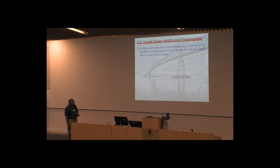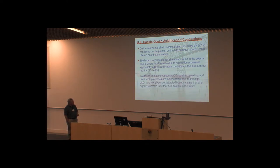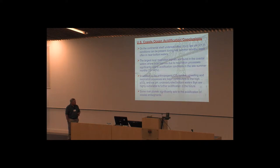In conclusion: continental shelf undersaturated zone pHs are less than 7.7, most often seen in near-bottom waters in late summer. The largest respiration signals are in coastal hypoxic regions — as much as 10^4 percent of the total acidification signal — raising CO2 levels to about 1200 ppm. Upwelling and respiration processes must be considered when designing acidification experiments with marine organisms, since these are the concentrations organisms experience every day. Some river plumes significantly add to acidification in coastal embayments.